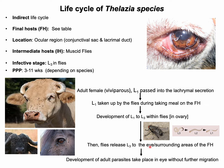The flies then release L3 larvae onto the eyes or surrounding area of the final host when they revisit for feeding. Finally, adult parasites develop in the eyes. For completion of the life cycle, it takes around 3 to 11 weeks, depending on the species and environmental conditions.